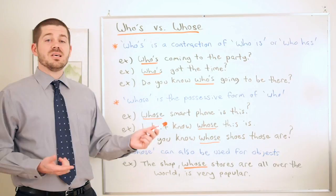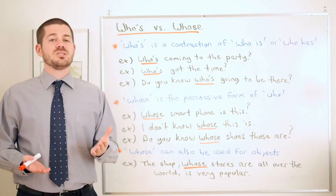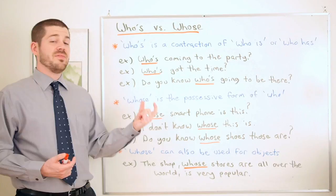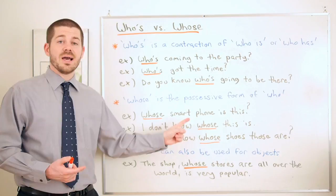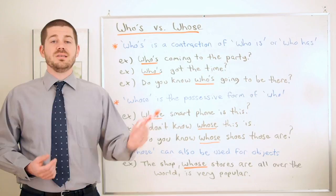For example: whose smartphone is this? So what we're asking here is who does this smartphone belong to, who possesses this smartphone. So whose smartphone is this. This is a possessive form because I want to know who does this object belong to.